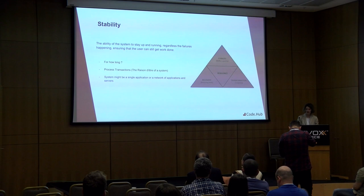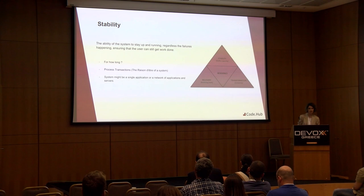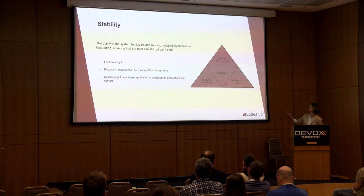Let's go quickly to some terminology. What is stability? Stability is the ability of the system to stay up and running regardless of the failures happening, ensuring that the user can still get work done. Someone would ask: for how long? I would say as long as you don't deploy anything into production. What exactly needs to keep going? It is the process transactions — the reason our systems exist.